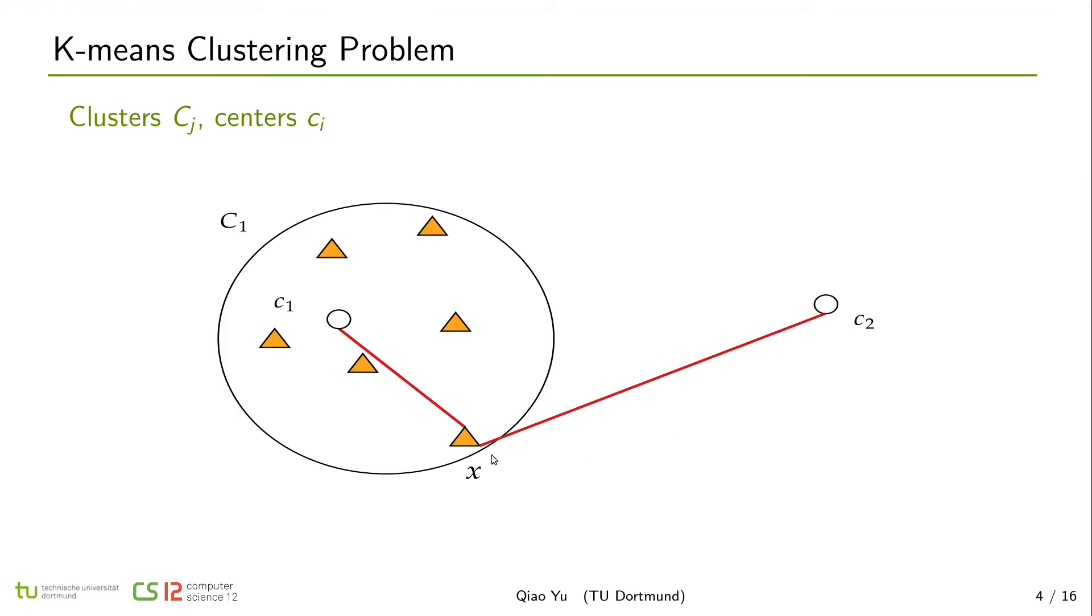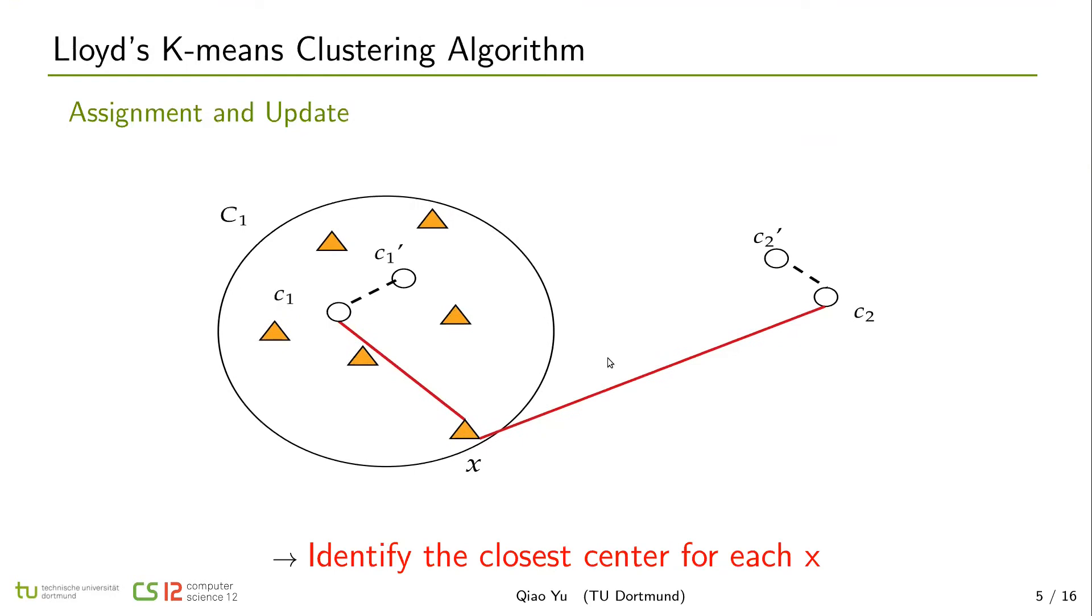Finally, x will be assigned to its closest center, c1, and cluster c1 will be built like this. And after all points are assigned to their closest centers, mean centers will be recalculated again, like c1 is updated to c1' and c2 to c2'.